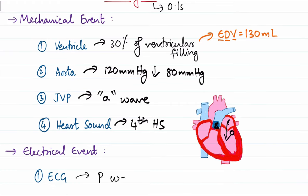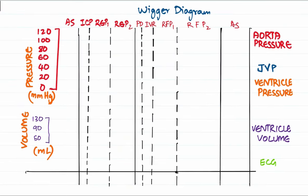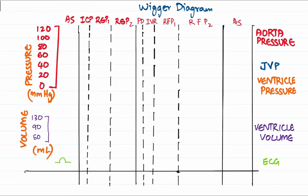In the ECG, atrial systole corresponds to the P wave. On the Wiggers diagram: the ECG shows the P wave; the ventricular volume shows the final 30 percent filling reaching 130 mL; the ventricular pressure shows only a slight increase since the ventricle is relaxed; and the JVP shows an elevation corresponding to the 'a' wave.